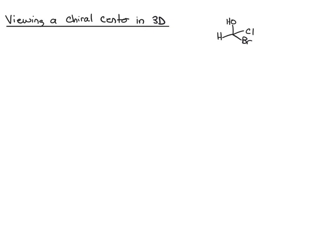What we're going to do next is take this first chiral molecule that we looked at and actually draw it and visualize it in three dimensions, because right now everything's drawn as flat, so you don't know really what the 3D structure is.